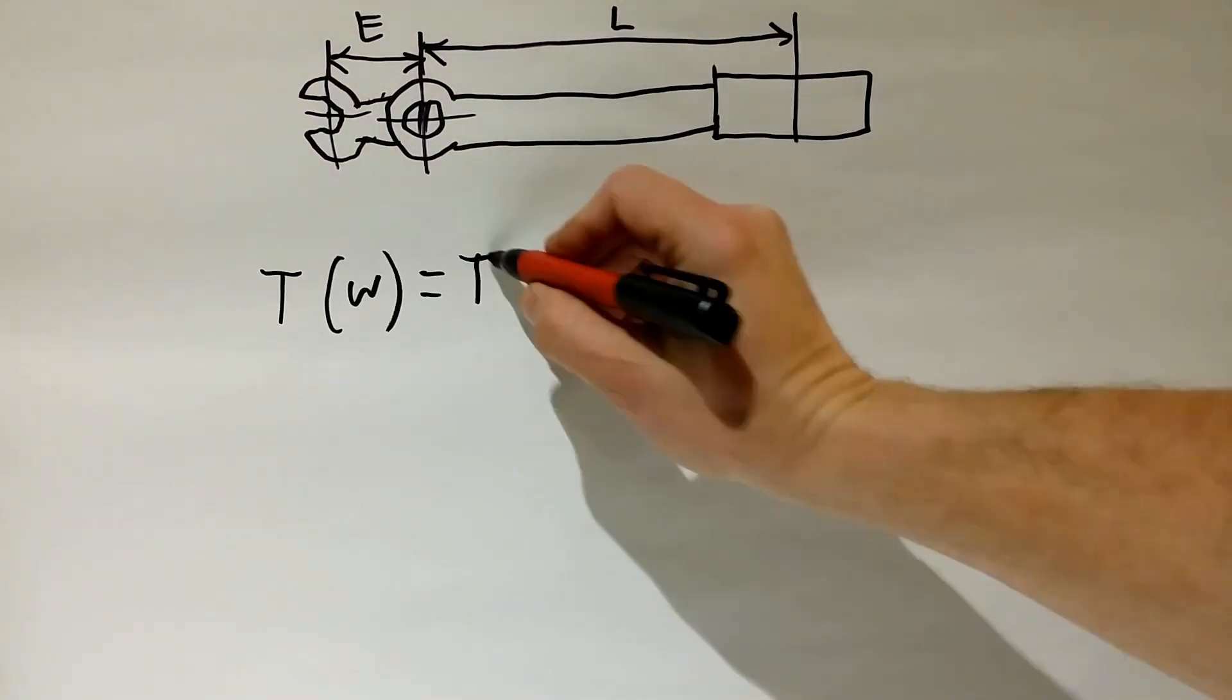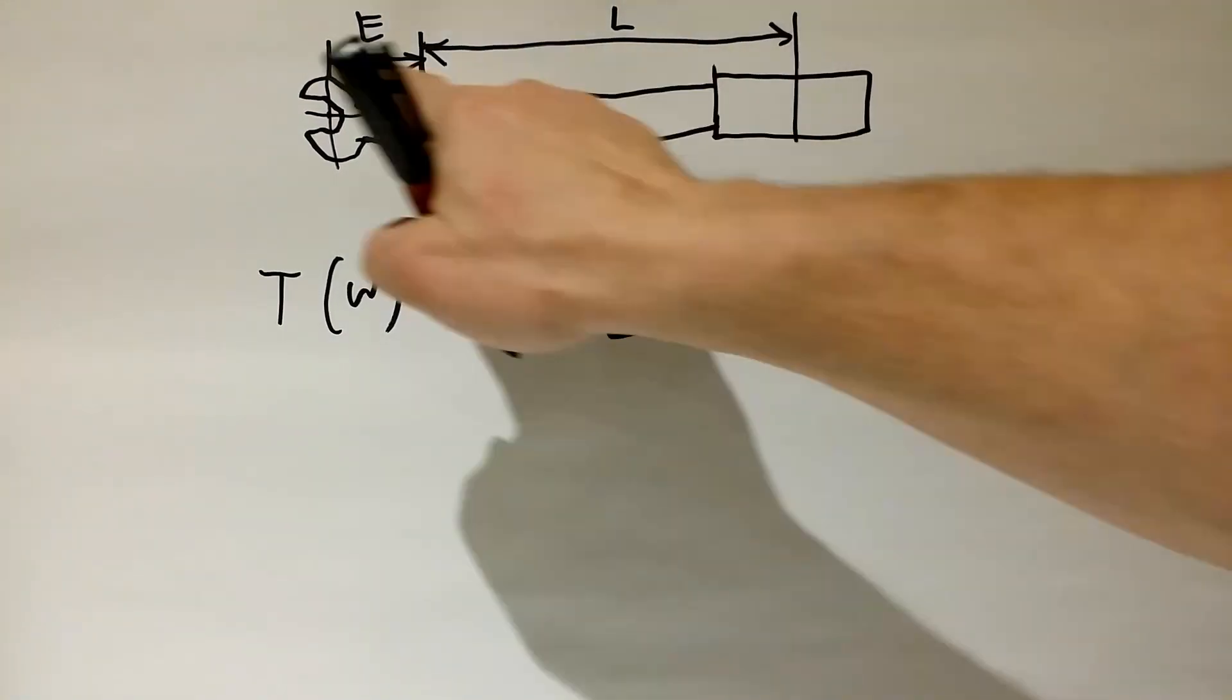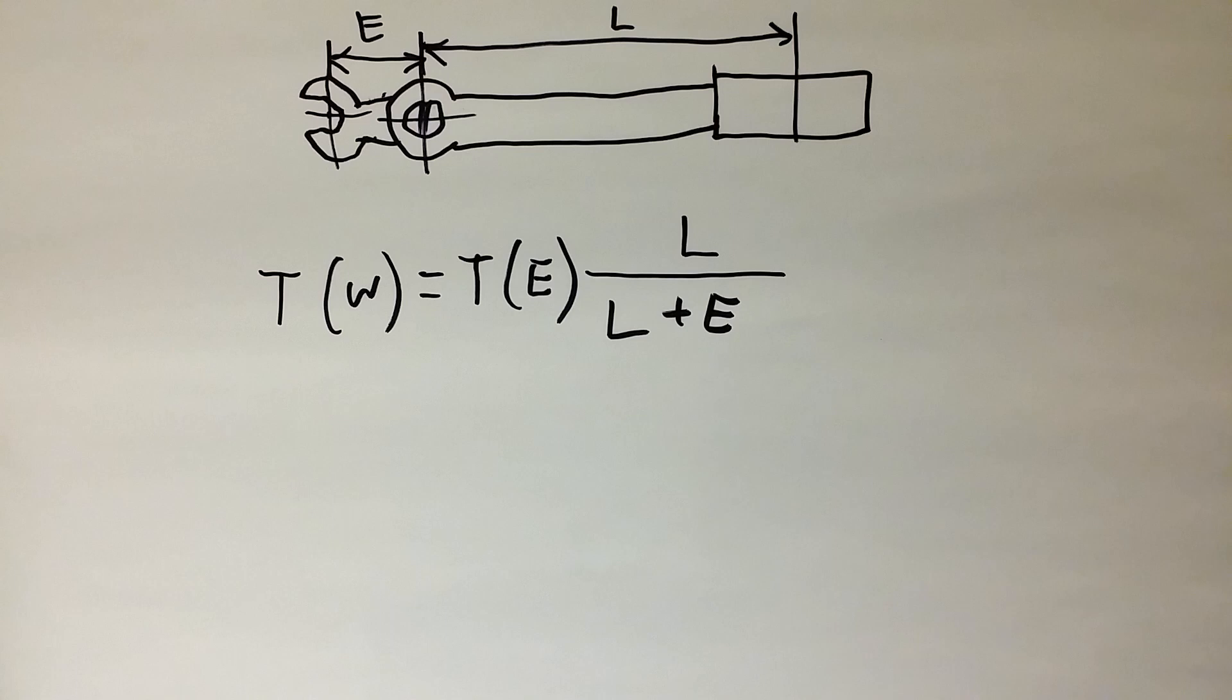We have formula. Tw, which is torque set on the wrench, equals Te, which is torque applied to the bolt, multiplied by L, which is length of the wrench, divided by L plus extension. We need to solve for the torque value on the wrench, Tw, that will provide torque to the nut or bolt, Te, that depends on the length of the wrench and extension.